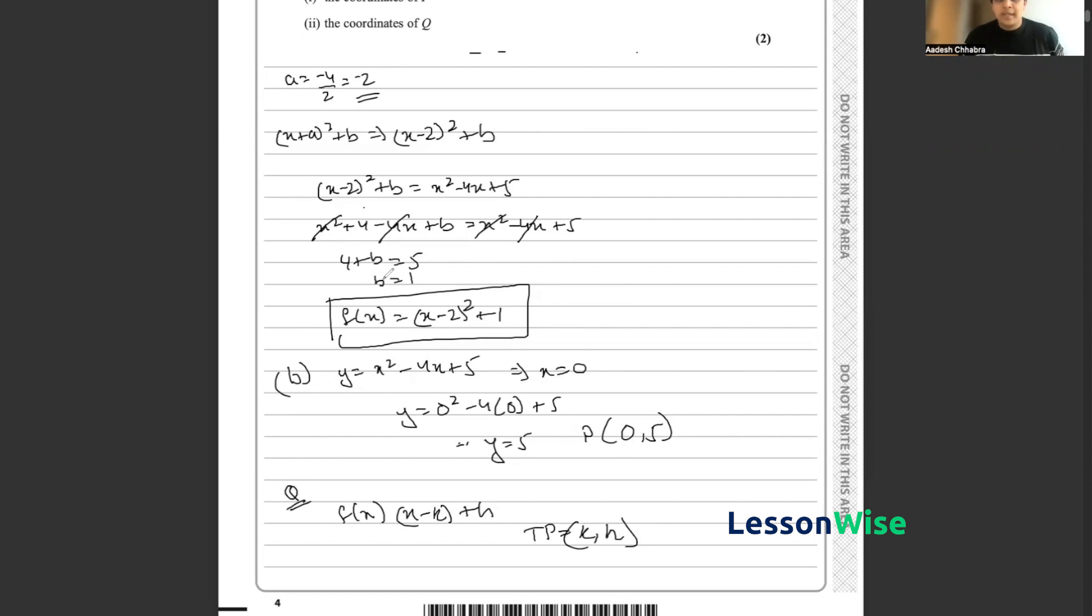So using this, we know that the turning point of the function is thus at (2, 1). And that is the second question solved.